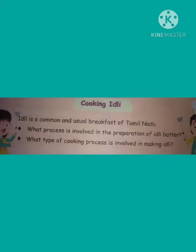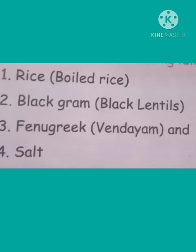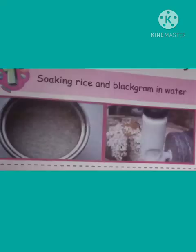Next, cooking idli. Idli is a common breakfast. What process is involved in making idli? The ingredients are rice, black gram, fenugreek seeds, and salt. First, soak rice and black gram in water. After soaking, grind them and add salt to the idli batter.